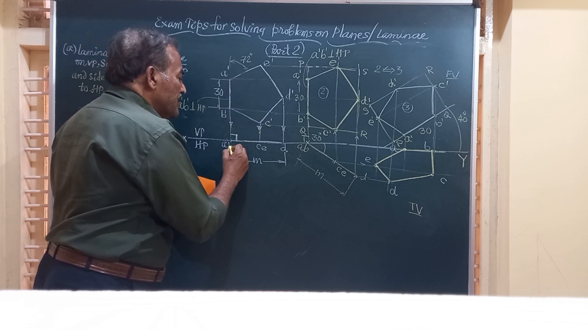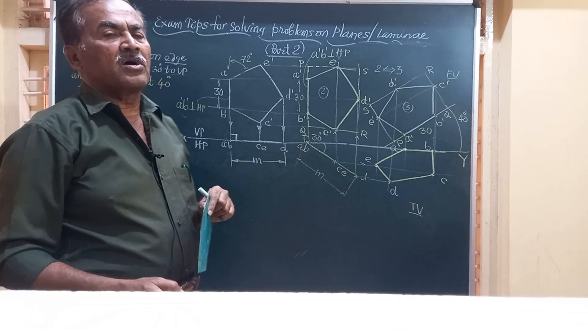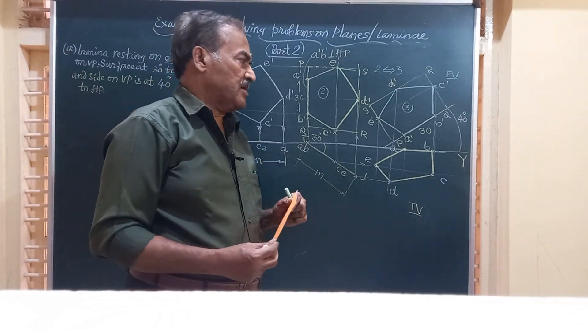Friends, I will project all these points and obtain A, B, C, D, and E, the five corners of the pentagonal lamina.